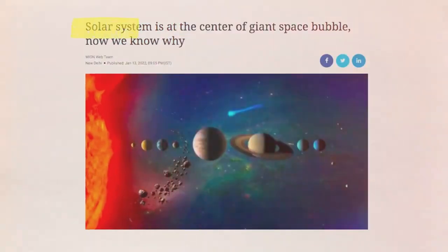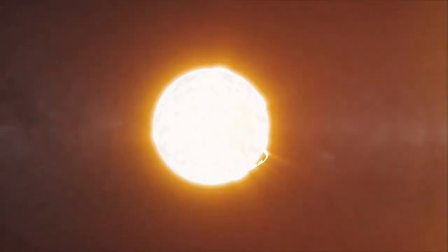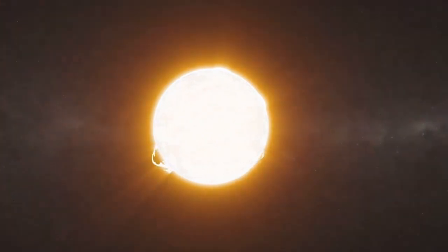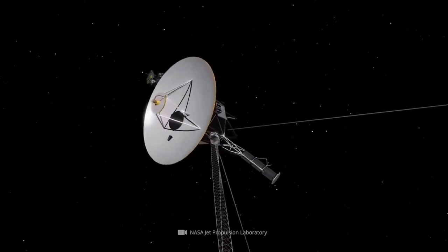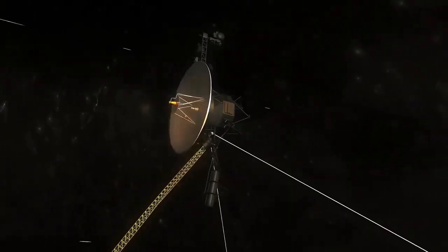However, its observations of the planet's magnetosphere, a protective magnetic bubble shielding Uranus from solar wind, were puzzling. The magnetosphere appeared unusually empty of plasma, leading scientists to believe Uranus had a magnetosphere fundamentally different from other planets in the solar system.